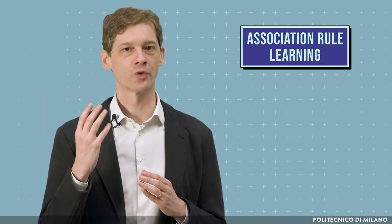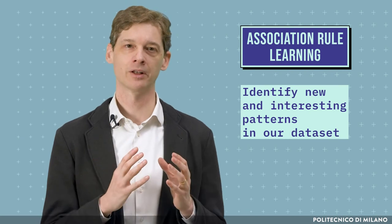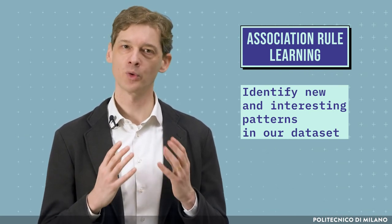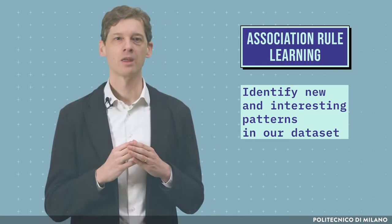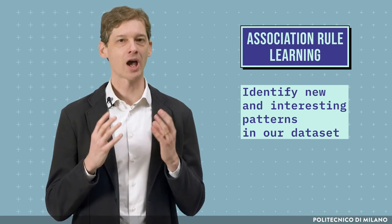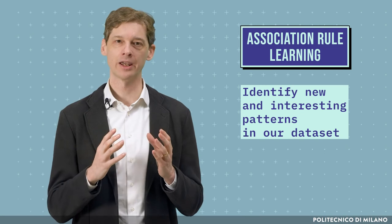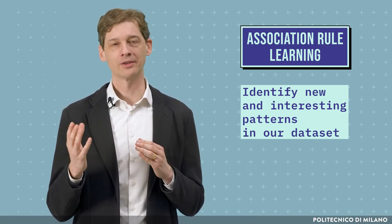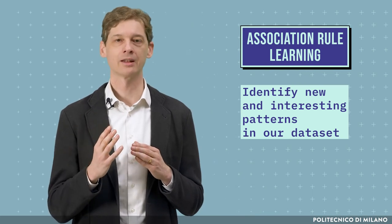In association rule learning, we want to identify new and interesting patterns in our dataset, which are usually represented in the form of rules or frequent item sets. They are commonly used for market basket analysis to know which items are bought together, for customer clustering in retail to know which stores people tend to visit together, price bundling, assortment decisions, cross-selling, and others.